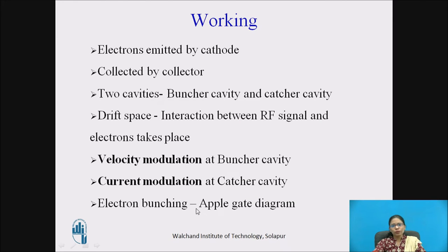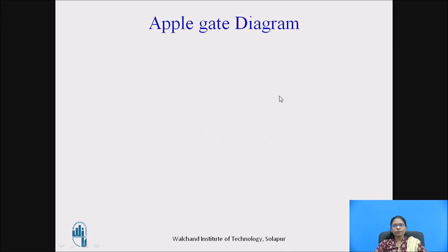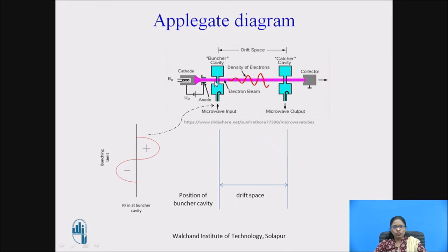The electron bunching process can be explained by the Applegate diagram. There are two cavities and a drift space between them where the interaction takes place. This is the RF cycle which is provided at the input, and the amplified output is obtained at the catcher cavity.